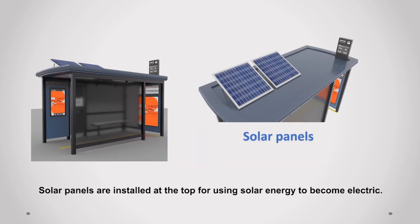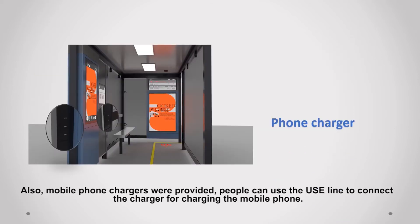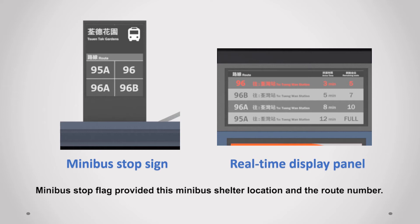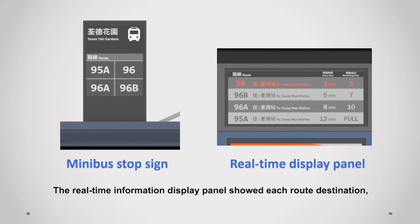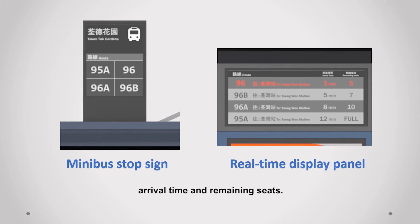Solar panels are installed at the top to convert solar energy into electricity. Mobile phone chargers are also provided, and people can use a USB line to charge their phones. A minibus stop flag shows the shelter location and route numbers, while a real-time information display panel shows each route's destination, arrival time, and remaining seats.